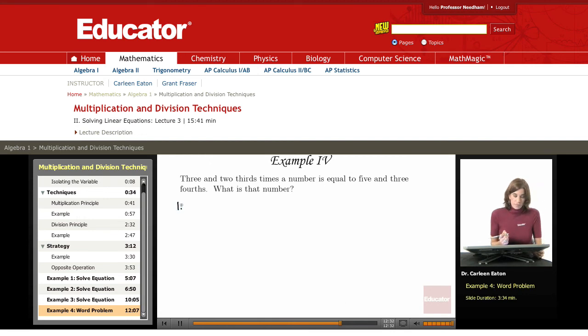First, I'm going to assign the variable, and it says a number. So I do have a variable, and I'm going to call it x. Let x equal a number. I've assigned the variable. I've got to then write the equation, and then I'm going to solve the equation.